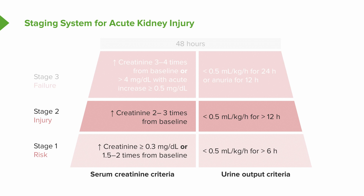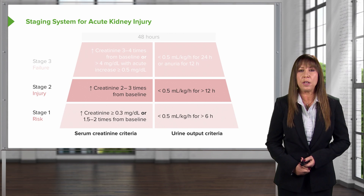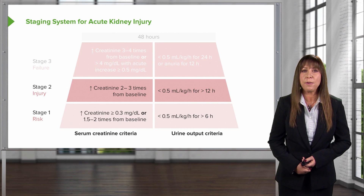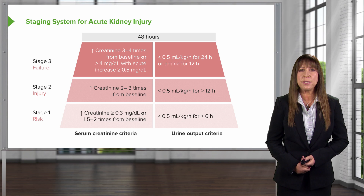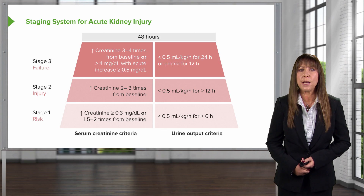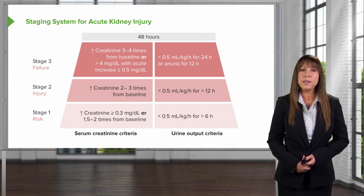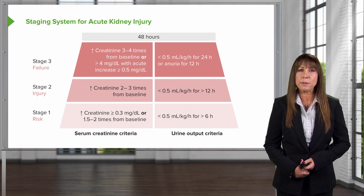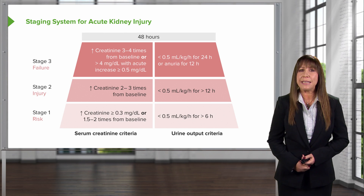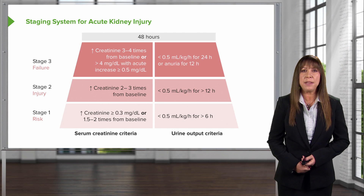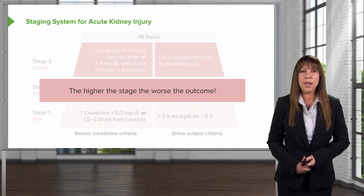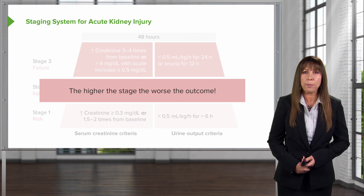Stage two is an increase in creatinine of two to three times normal, with a reduction in urine output over a 12-hour period. Stage three is where serum creatinine is increased three to four times normal, or a serum creatinine greater than 4 mg/dL with an acute increase of at least 0.5 mg/dL. These patients are often anuric. The higher the stage, the worse the outcome.